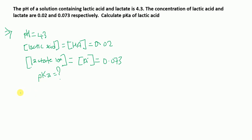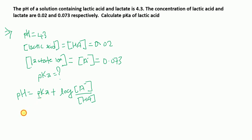From the Henderson-Hasselbalch equation, pH = pKa + log([A⁻]/[HA]). We need to find pKa, so rearranging: pKa = pH − log([A⁻]/[HA]).